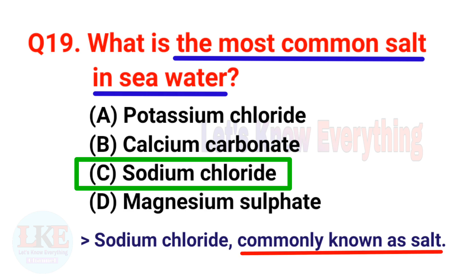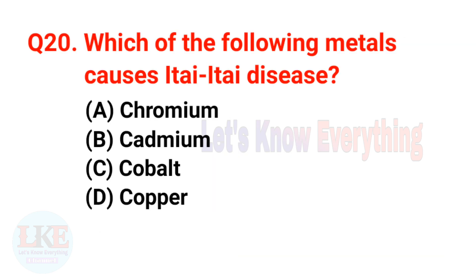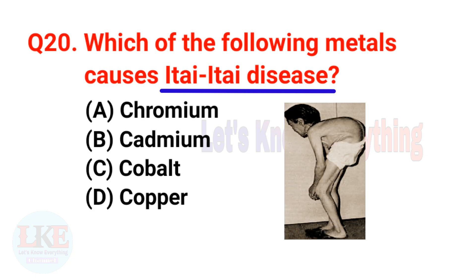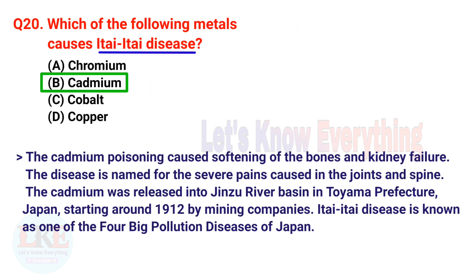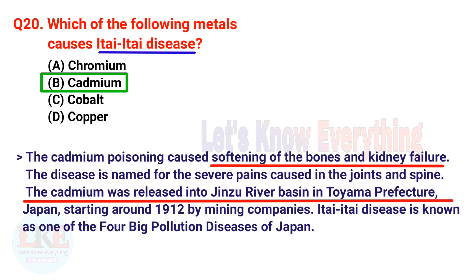Last and final question, number 20: Which of the following metals causes Itai-Itai disease? A) Chromium, B) Cadmium, C) Cobalt, D) Copper. The right answer is option B, Cadmium. Cadmium poisoning causes softening of the bones and kidney failure. The disease is named for the severe pain caused in the joints and spine. Cadmium was released into the Jinsu River basin in Toyama Prefecture, Japan, starting around 1912 by mining companies. Itai-Itai disease is known as one of the four big pollution diseases of Japan.